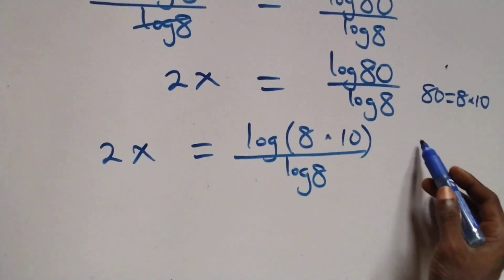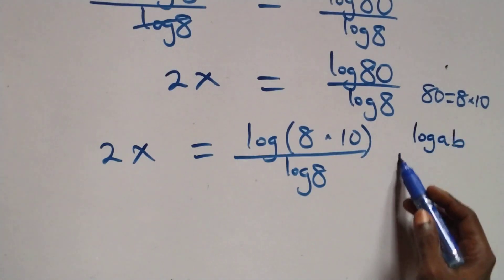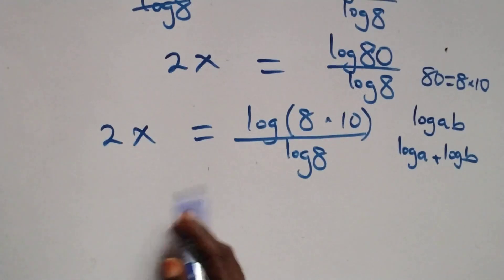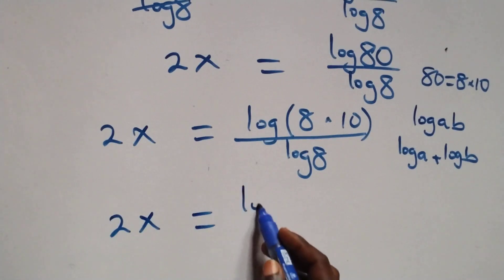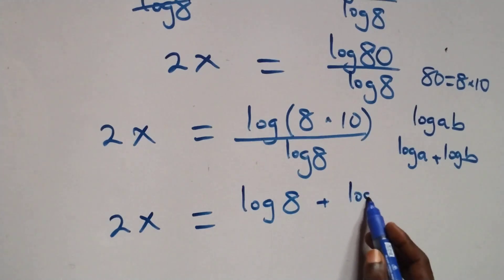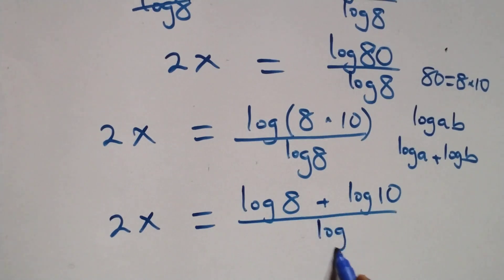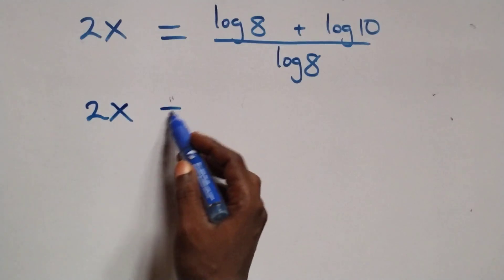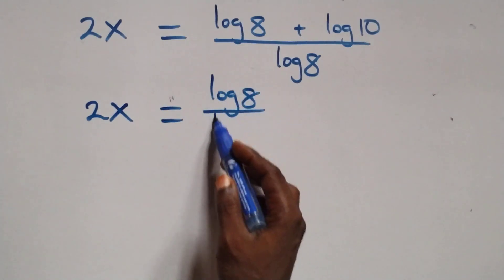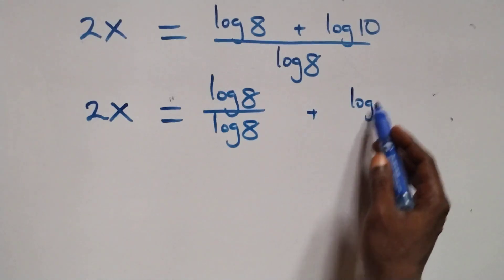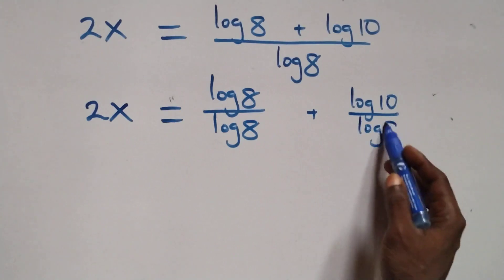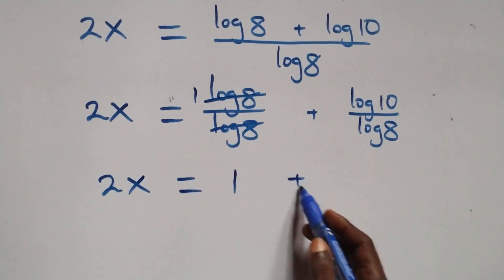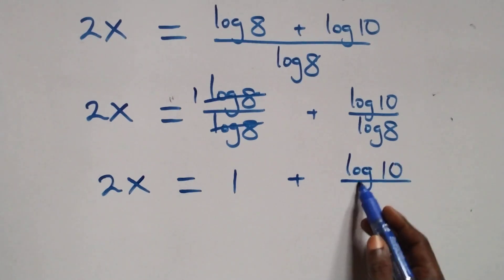This follows from the law of logarithms: log(a times b) is the same thing as log a plus log b. So what we have becomes 2x equals (log 8 plus log 10) over log 8. We then separate this into two fractions: 2x equals log 8 over log 8 plus log 10 over log 8. The log 8 terms cancel each other, which implies 2x equals 1 plus log 10 over log 8.